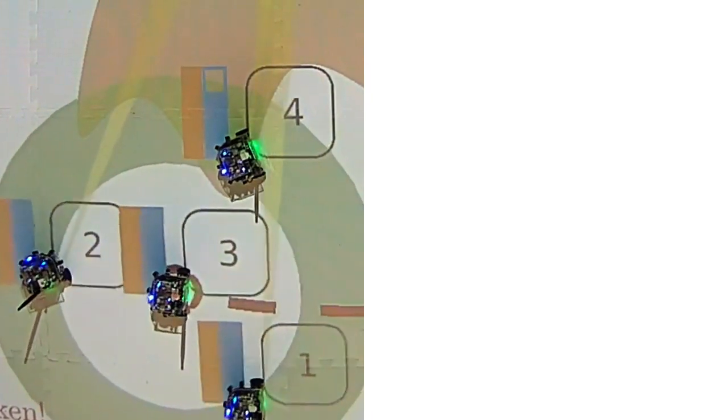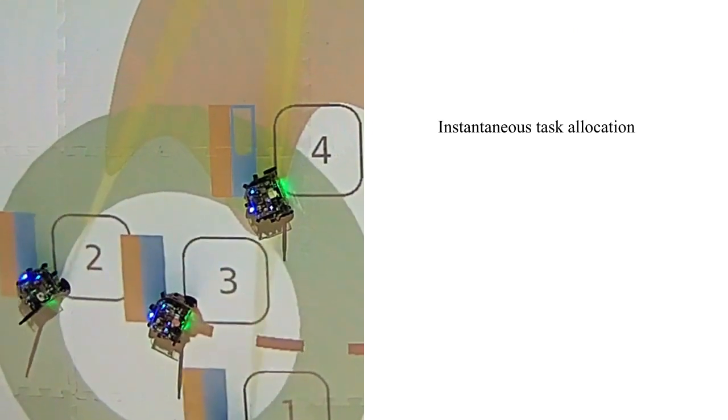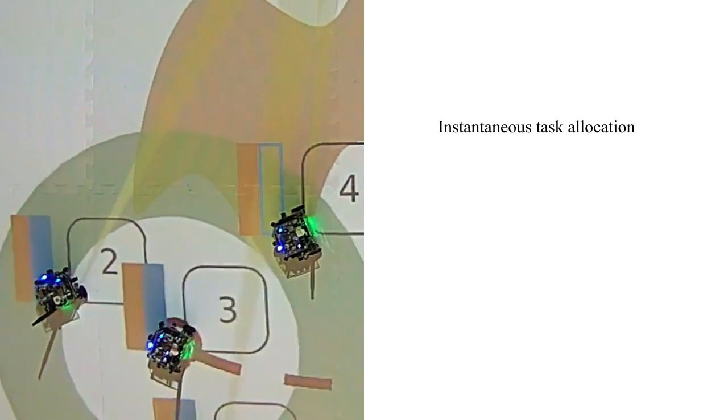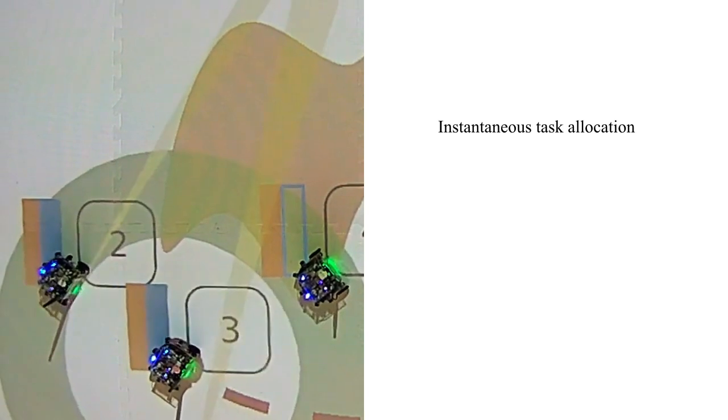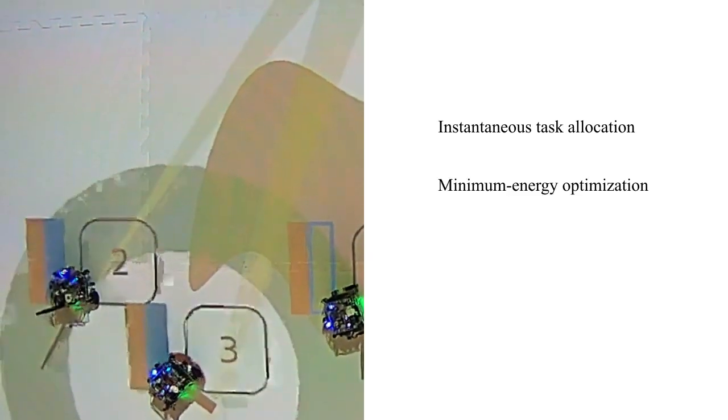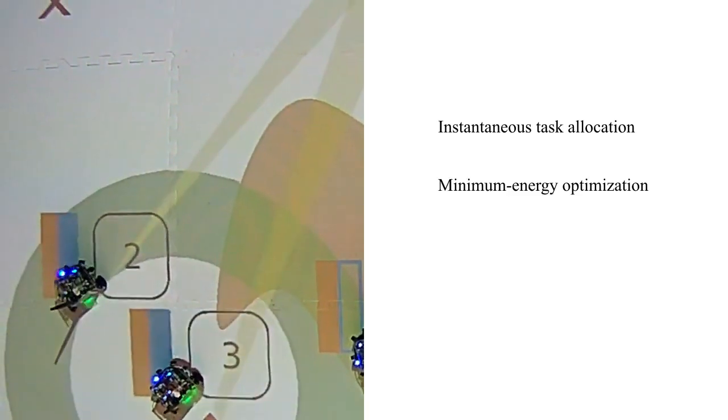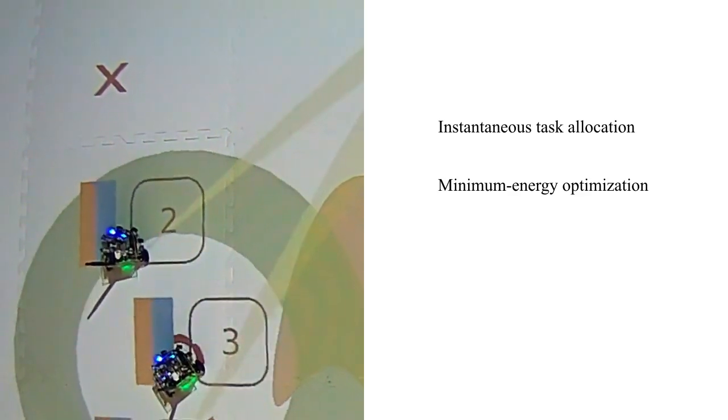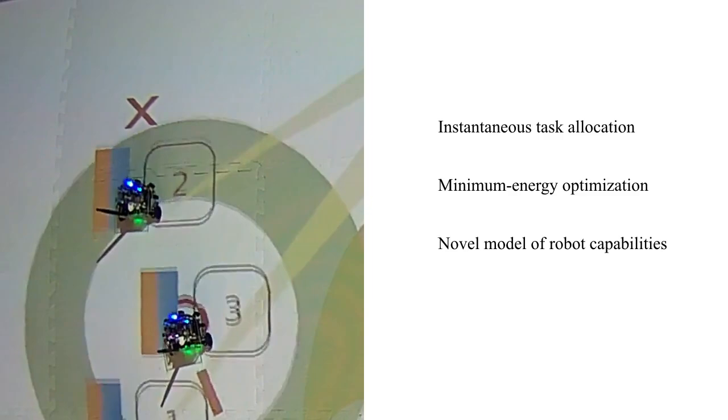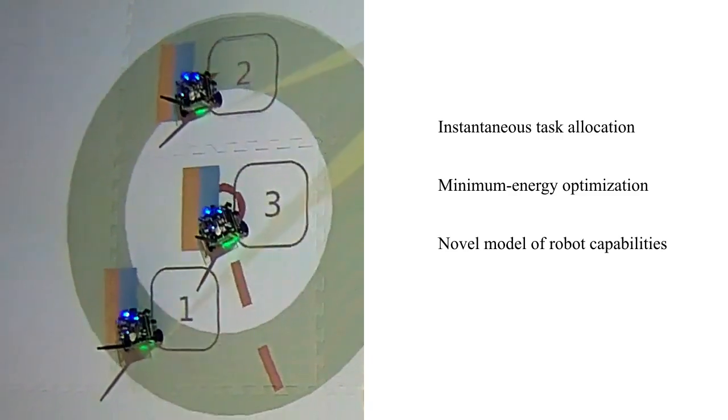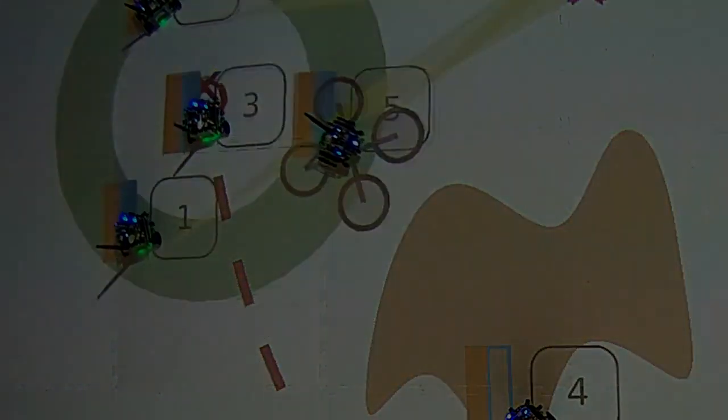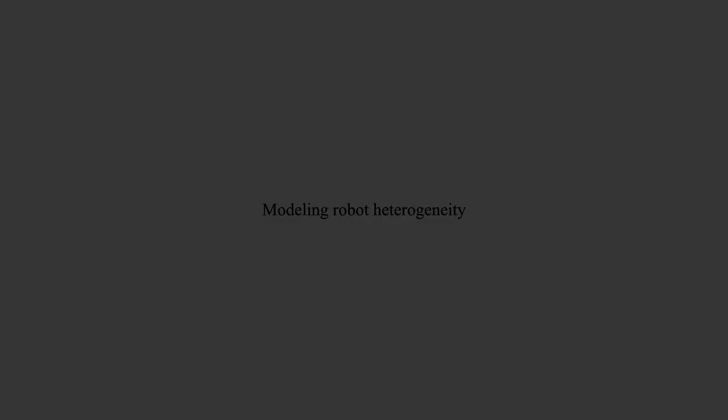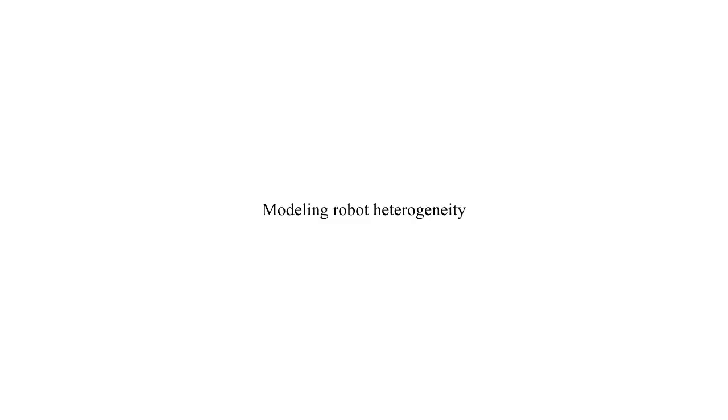These features emerge all from the instantaneous allocation of tasks to robots, performed by means of an optimization problem, whose objective consists of minimizing the effort spent by the robots to execute tasks, while guaranteeing that all tasks are effectively executed. This is realized by leveraging a novel model of robot capabilities. This model allows us to very naturally encode heterogeneity, and it is based on the following idea.